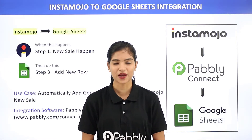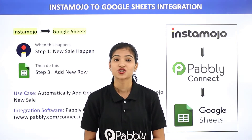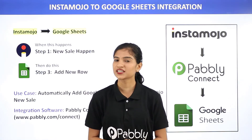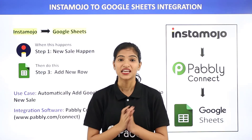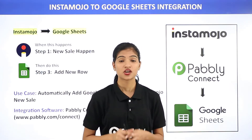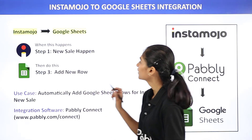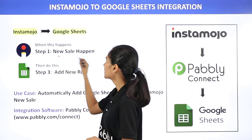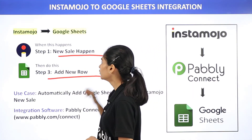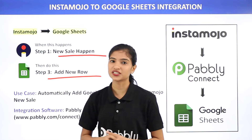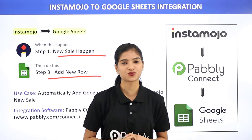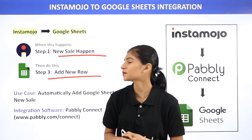Hello everyone, welcome to Pabbly Connect. Today in this video, we are going to integrate two software applications, Instamojo and Google Sheets. The use case here is whenever a new sale happens in Instamojo, automatically add a new row in Google Sheets. Now let us know what these two software applications are all about.